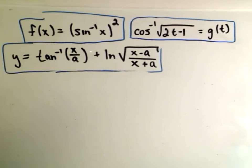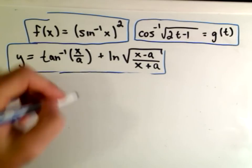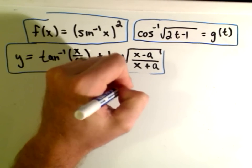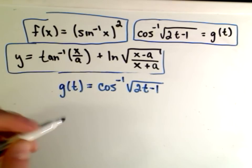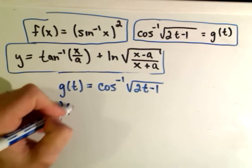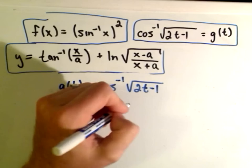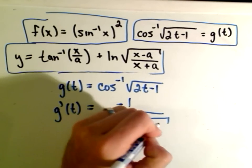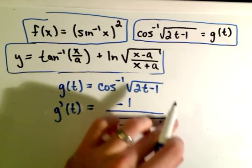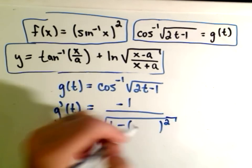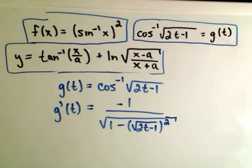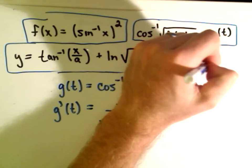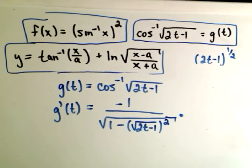I think the next one, the last two are a little more typical. So g of t equals arc cosine of square root of 2t minus 1. So here we're going to have to remember to use the chain rule. The derivative of arc cosine, we get negative, I'll put the negative on top, and it says whatever's next to the arc cosine, that stuff gets squared. Well, the stuff that's being squared is the square root of 2t minus 1. But then we have to take the derivative of 2t minus 1, the square root of that,